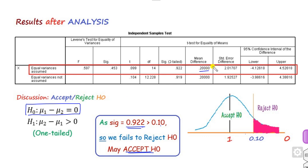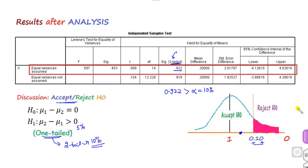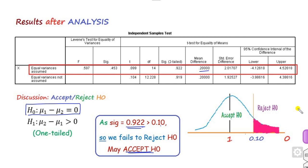Looking at the output table, the mean difference between the two groups is 0.2. This value may be written as positive or negative depending on the sign of the difference. The confidence interval shows the range in which the true difference lies. This completes the procedure for applying the hypothesis testing for the two-sample independent T-test in SPSS.